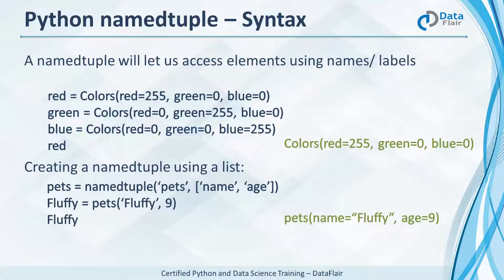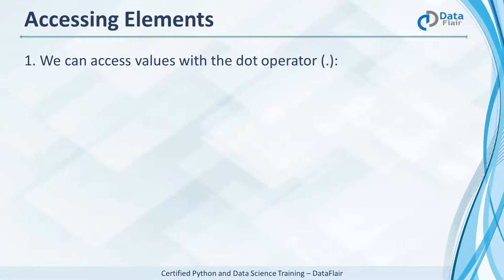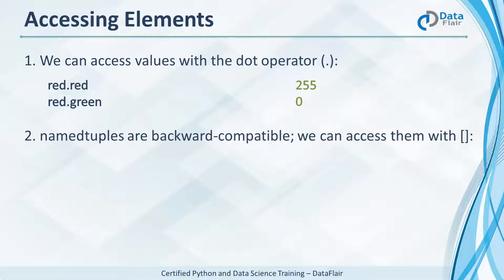When we print it, we have this. Let's see how we can access values in a named tuple. Let's do this with the dot operator. Red dot red is 255 and red dot green is zero. But we can also index them with square brackets because they are backward compatible. The first value in red is 255.